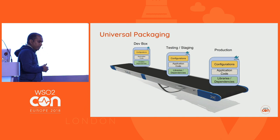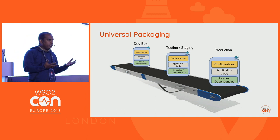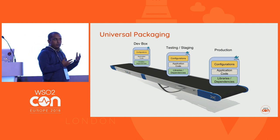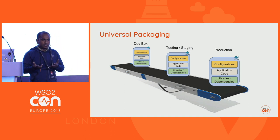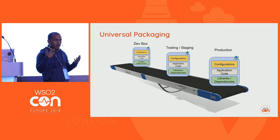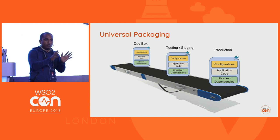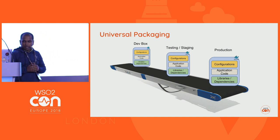The second advantage is a universal packaging model. When you build a Docker image, that same image can be used across different stages — developer stage, test stage, and production stage. Only environment-specific variables need to be passed in; everything else travels as a universal package through the pipeline.